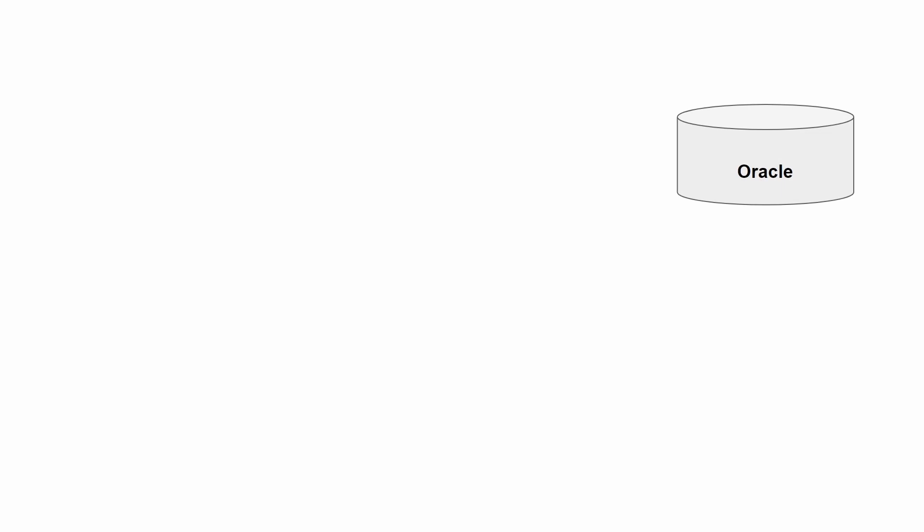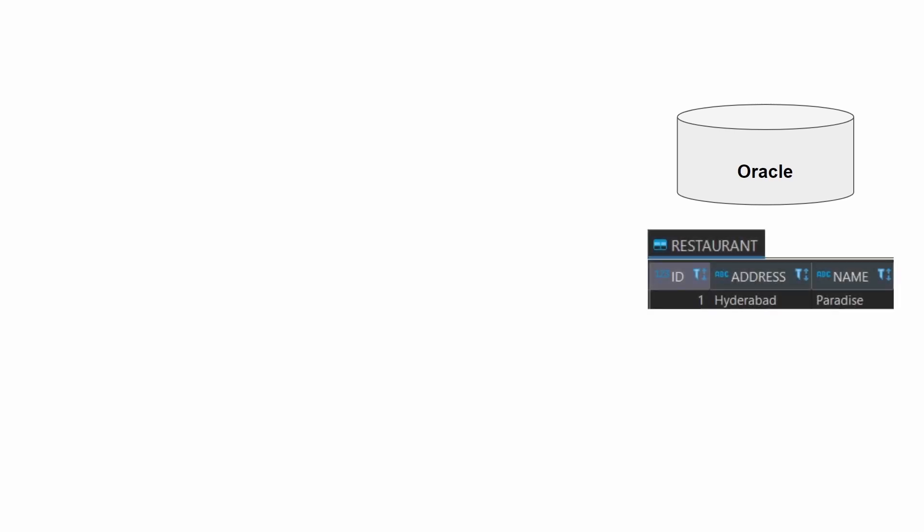Before diving into the actual implementation, let us first understand the flow of data from the database into the Spring framework. This explanation is related to multiple database connections. We have the Oracle database with a table called restaurant, which has three columns: id, address, and name. Spring Boot provides a bean called DataSource which connects to the database and can perform various CRUD operations.